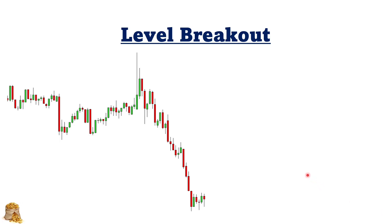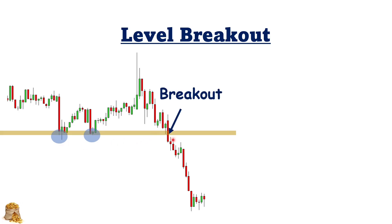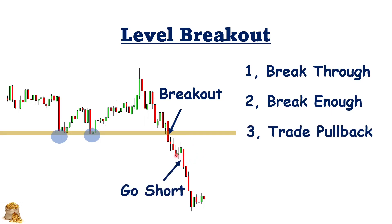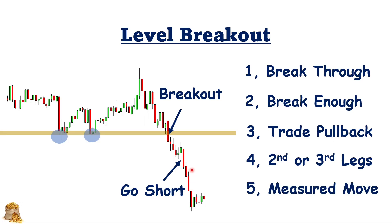Now let's move on to the level breakout situation. In this chart we can see there are two lows, so we can define the support or resistance level. When the market comes to the level and then breaks it, we are waiting to see first that it should break through rather than just consolidating, and second that it should break far enough to make sure it is a breakthrough rather than just consolidating. Sometimes due to momentum the market could just break a little bit and then reverse. Then we can trade the pullback — here come two bull bars as the pullback, and then there's a very good signal bear bar. We can go short at this opportunity and trade for the second or third leg down. In terms of profit target, we can use the measured move or N times your risk based on your study.